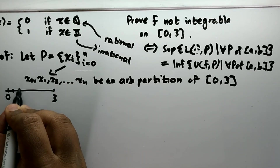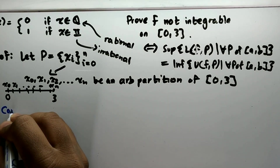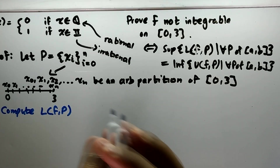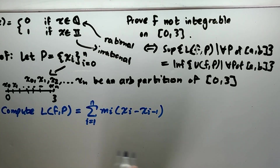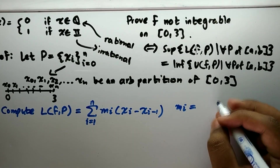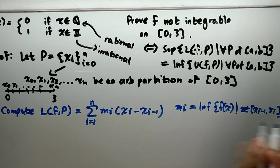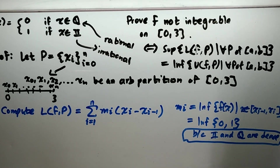We split up the interval using these partitions. To compute the lower sum, the formula is the summation from i equals 1 to n of m_i times (x_i minus x_{i-1}). We need to find m_i, which is the smallest possible value f(x) can take on the interval [x_{i-1}, x_i]. Since rationals and irrationals are dense, there's an infinitesimally small distance between them, so the only two possible values are 0 and 1, and the smallest is 0.